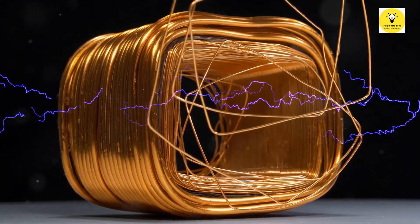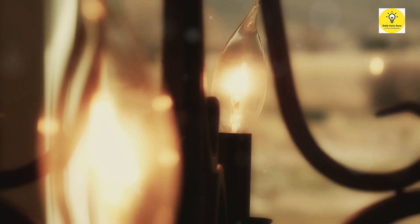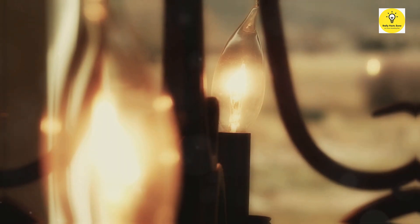Electric currents also generate magnetic fields. This principle is the foundation for electromagnets, which can be turned on and off by controlling the electric current.